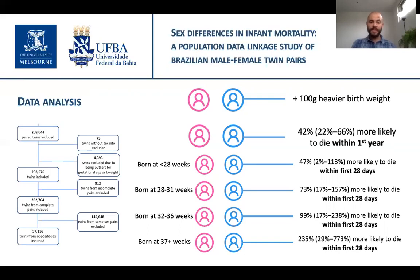When looking specifically at neonatal deaths — those happening in the first 28 days of life — we also stratified the analysis by gestational age. We found that the adjusted odds ratios for neonatal death increased from those born very prematurely, such as at 28 weeks, to those born at longer gestational ages, such as more than 37 weeks, which is considered a term pregnancy.